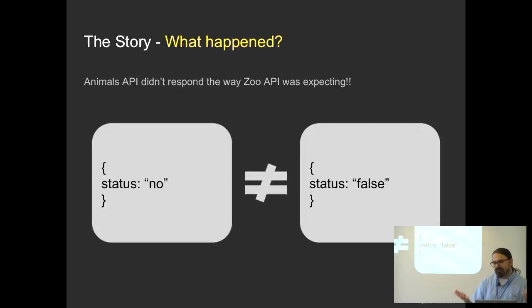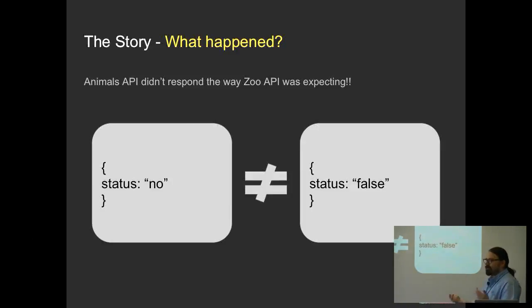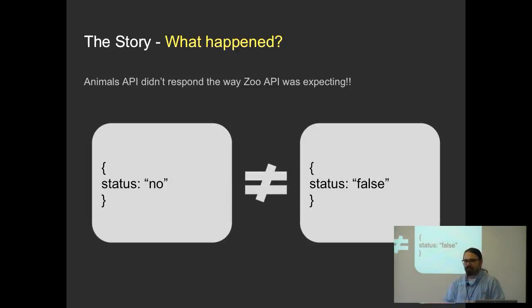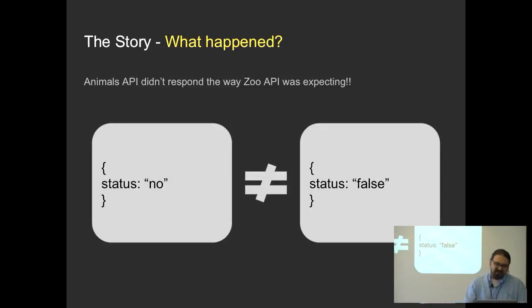The error they found was actually very simple. Someone changed the status value from "no" to "false", because it made more sense programmatically. Why would you use the string "no" instead of "false"? So something broke.